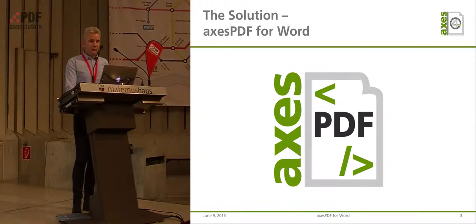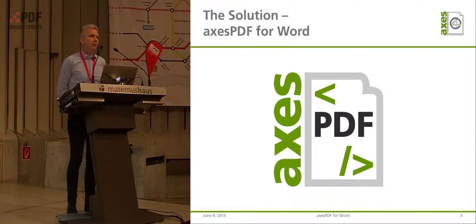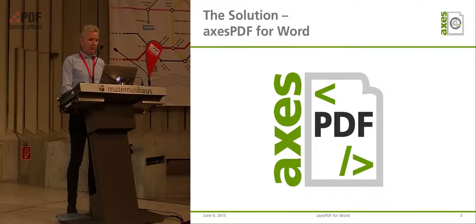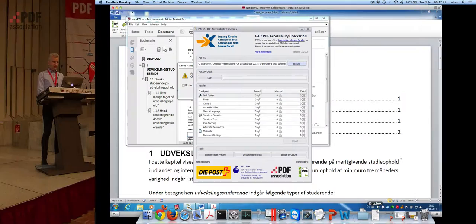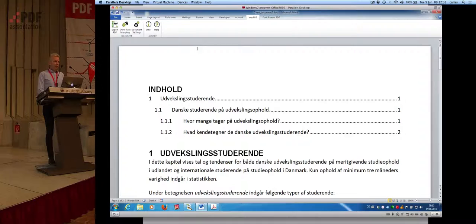The solution is here: we have the tool called Access PDF for Word, which has now been shipped in the first preview version. The full version will be released later this summer, but already now it is a very decent tool. If you have made some decent styling in your Word file, you are able to, with one click only, create an accessible PDF.